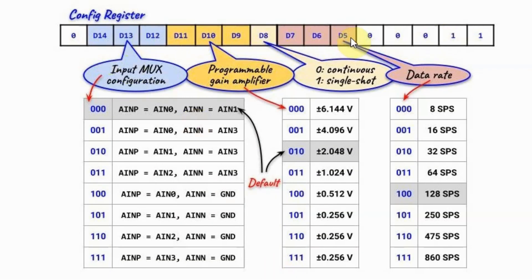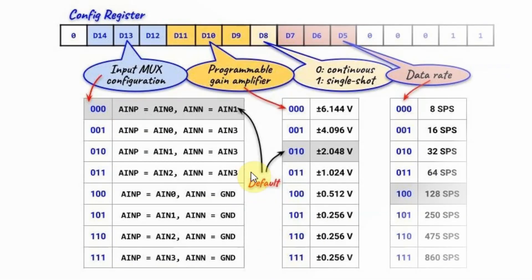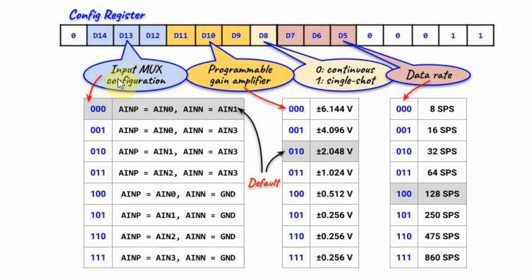Inside the config register, certain bits determine the data rate of the ADC from 8 samples per second all the way to 860 samples per second. Another bit determines the mode of conversion, whether continuous or single-shot. Other bits program the gain amplifier to give a full-scale range from ±6.144V down to ±0.256V. Additional bits program the multiplexer for differential or single-ended inputs. For the remaining bits, default values are used, and their full definition can be found in the datasheet.